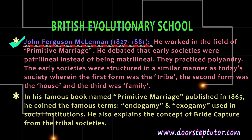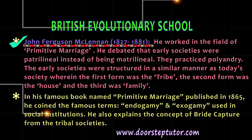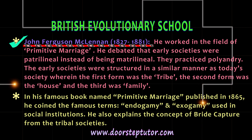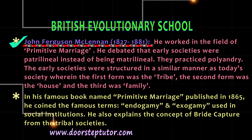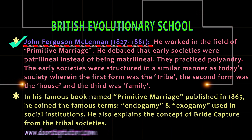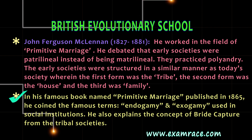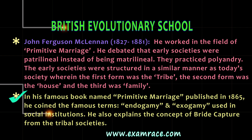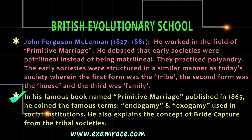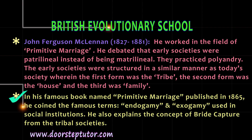John Ferguson MacLennan worked in the field of primitive marriage. He argued that early societies were matrilineal rather than patrilineal and practiced polyandry. The early societies were structured similarly to today's society, wherein the first form was the tribe, the second was the house, and the third was the family. In his famous book Primitive Marriage, published in 1865, he coined the famous terms endogamy and exogamy used in social institutions. He also explained the concept of bride capture from tribal societies.